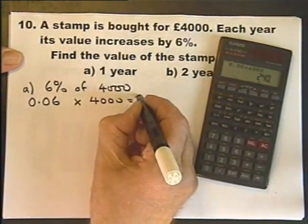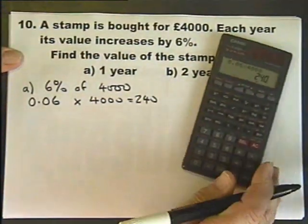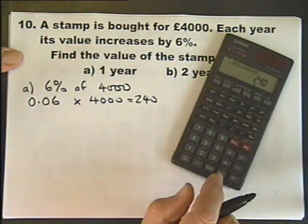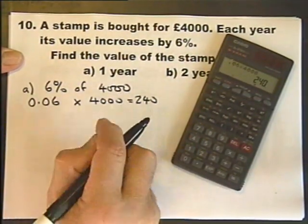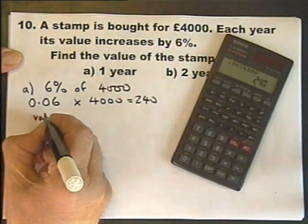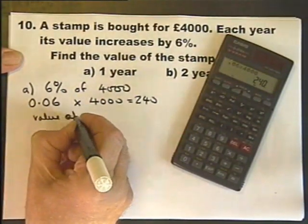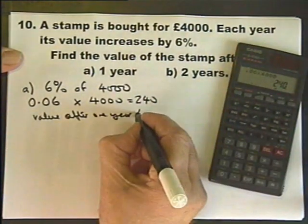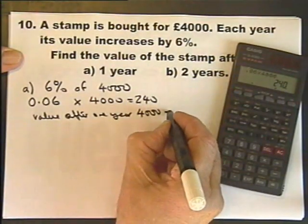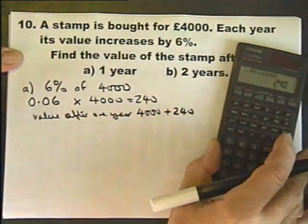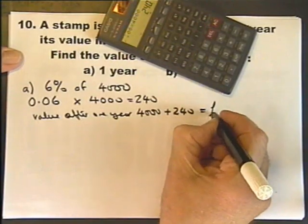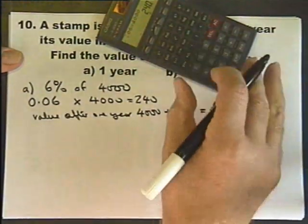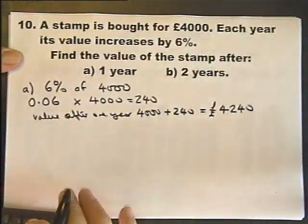So 0.06 times 4,000, if I type this into the calculator, that is £240. That's 6% of 4,000. So value after one year is the 4,000 plus the 240, which equals £4,240. That's the value at the end of the first year.